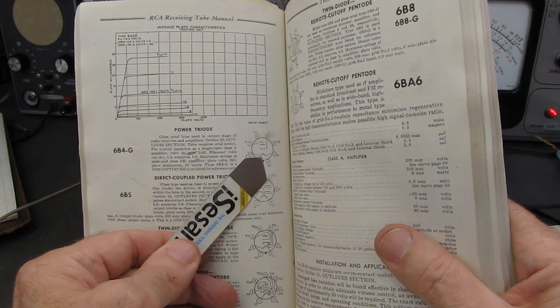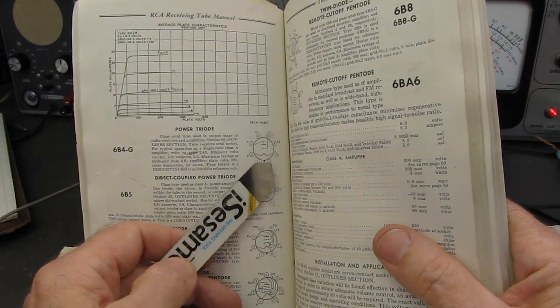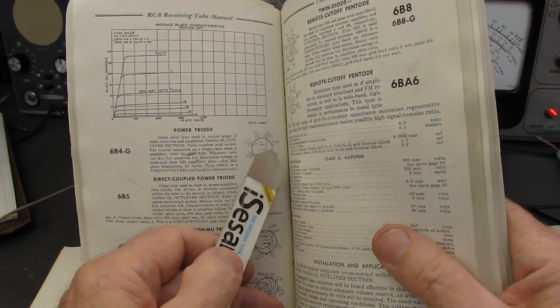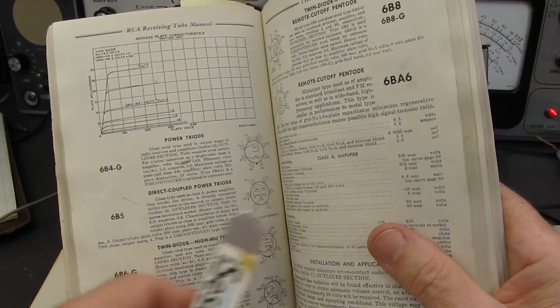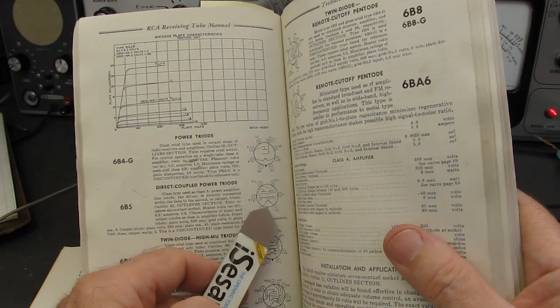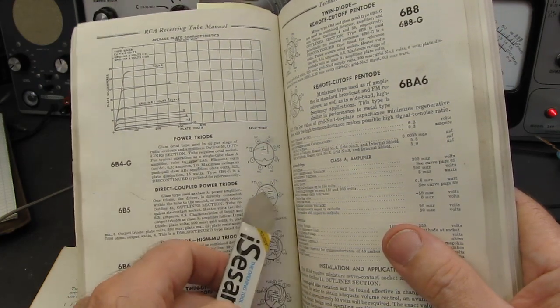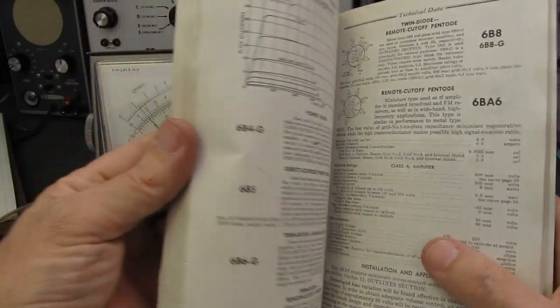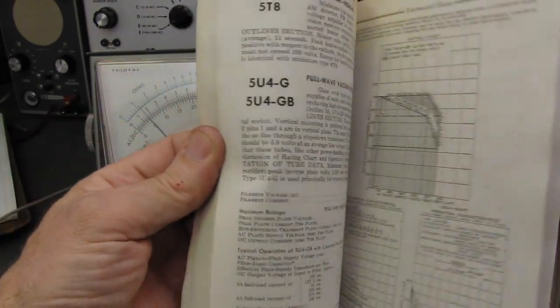6B5. 6B5 is an indirectly heated cathode, so the filament does not count. 6B5. 1, 2, 3, 4, 5, 6 active elements. There are thousands of examples in this book that follow along here. Let's see. 5U4, 5Y3.